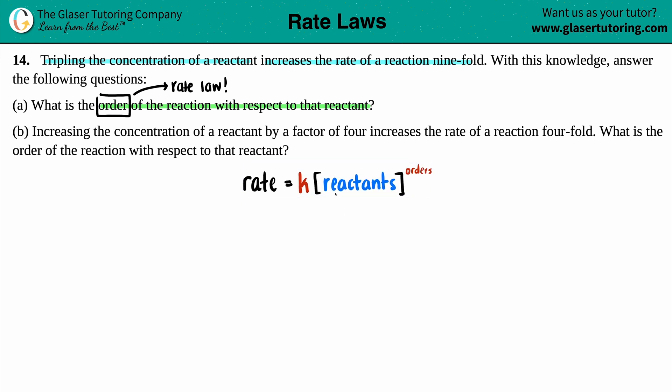The formula for a rate law is: rate of reaction equals the k value, lowercase k, which is the rate constant. For every given reaction, there is its own unique rate constant that stays constant. So the rate of reaction equals that constant value times the concentration of the reactants raised to the orders. This is what we're looking for - we want to find these exponents.